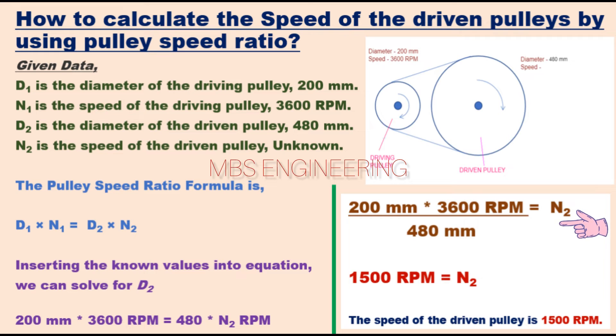We get N2 equals 200 mm multiplied by 3600 RPM divided by 480 mm, then N2 equals 1500 revolutions per minute. Therefore, the speed of the driven pulley is 1500 revolutions per minute.